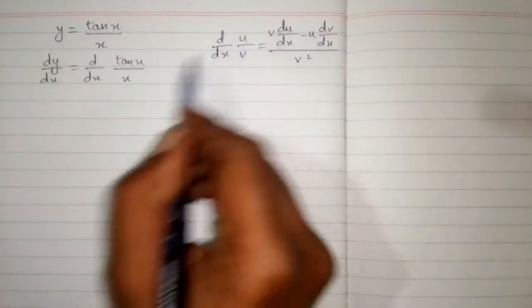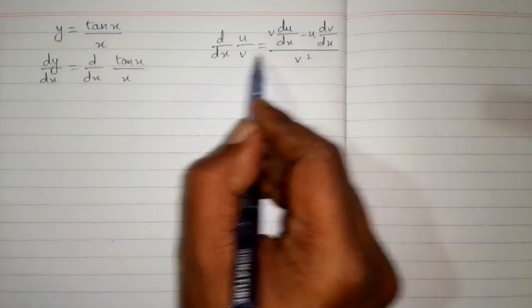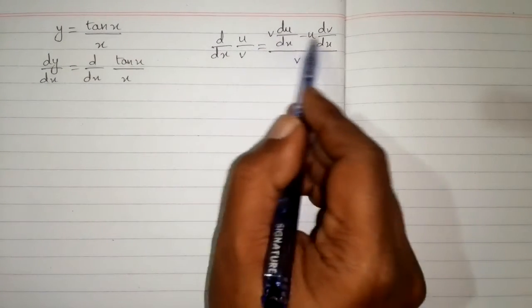So here we have tan x in place of u and x in place of v. So we will put the values of u and v in this formula.